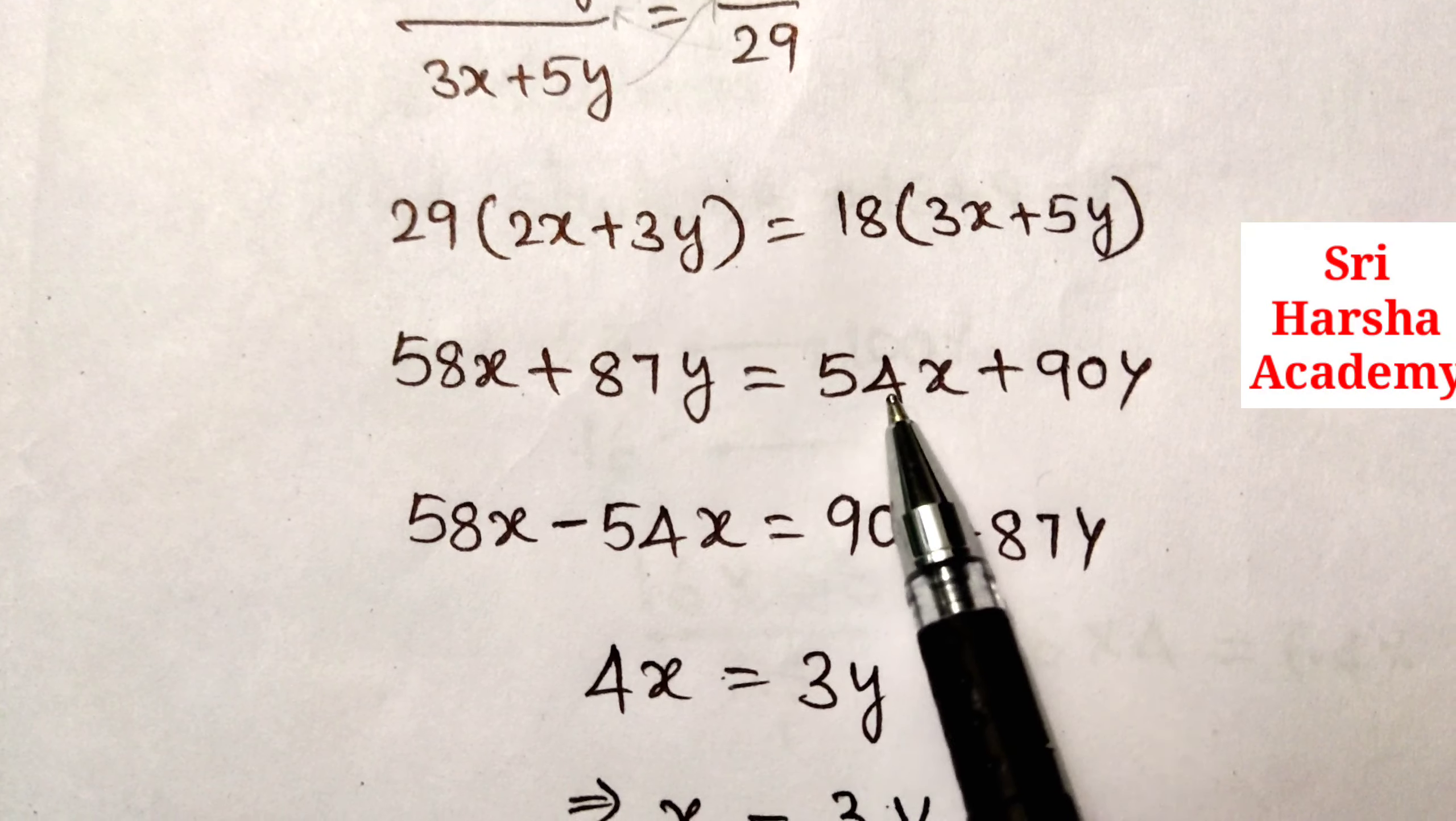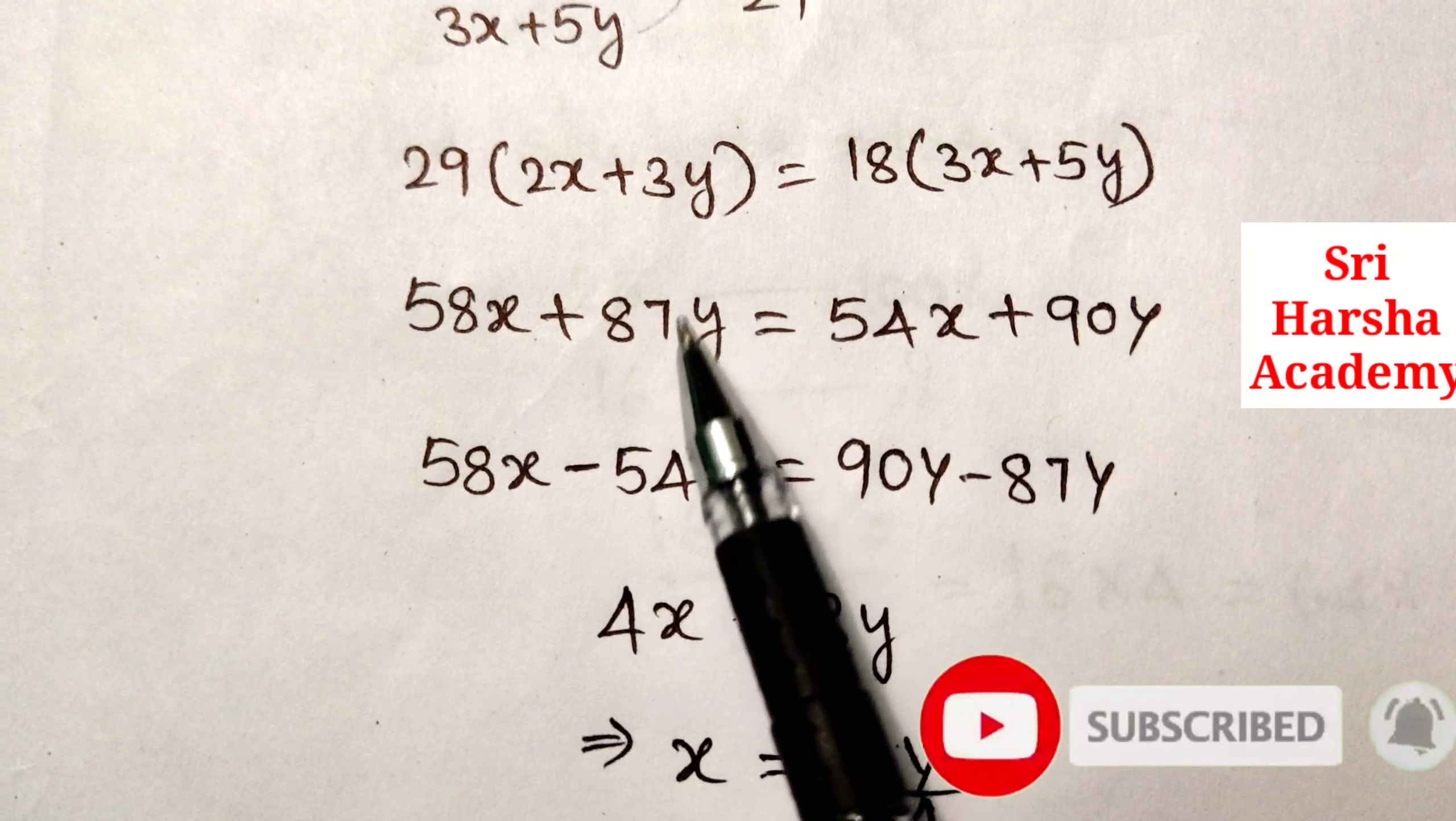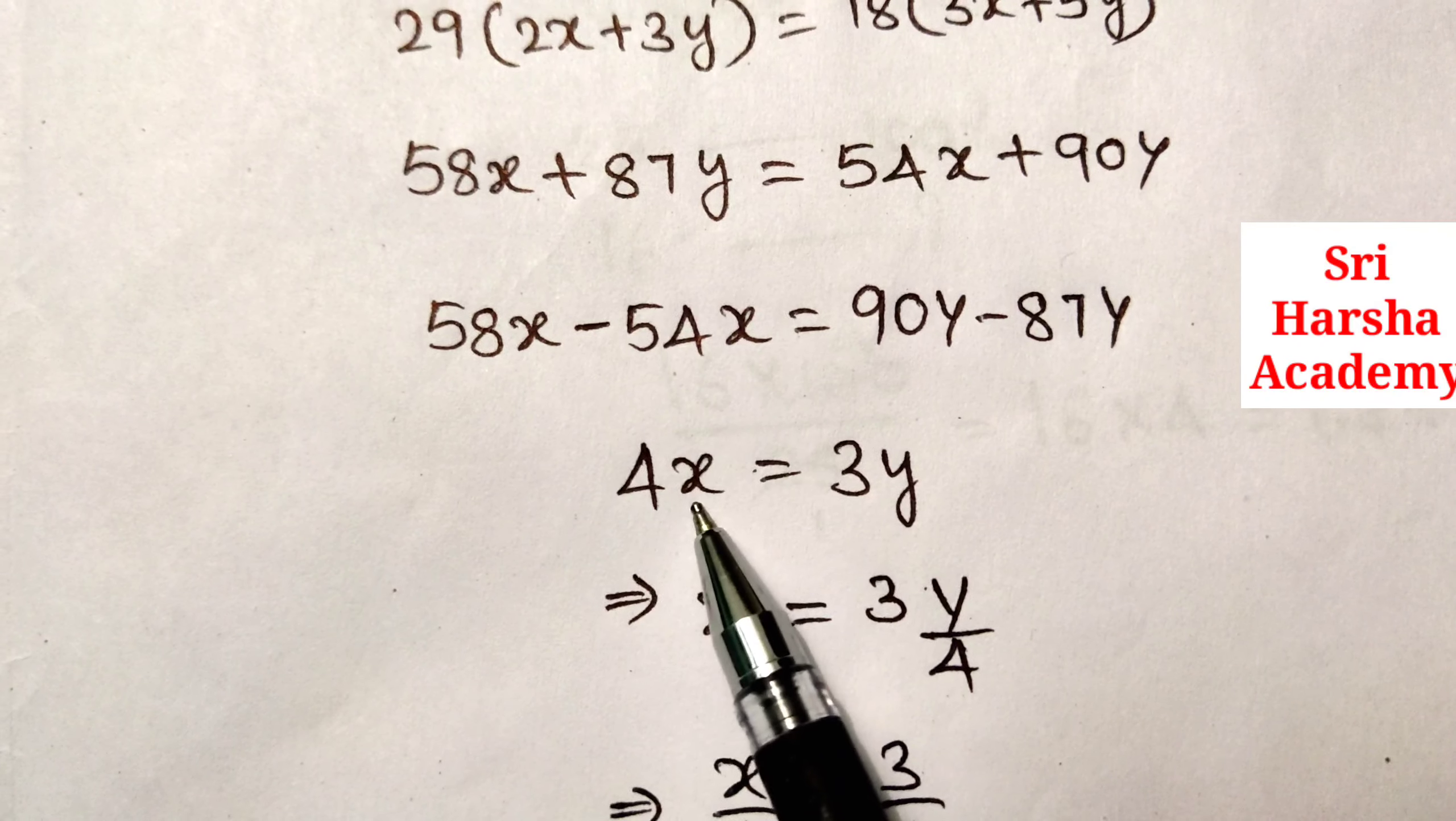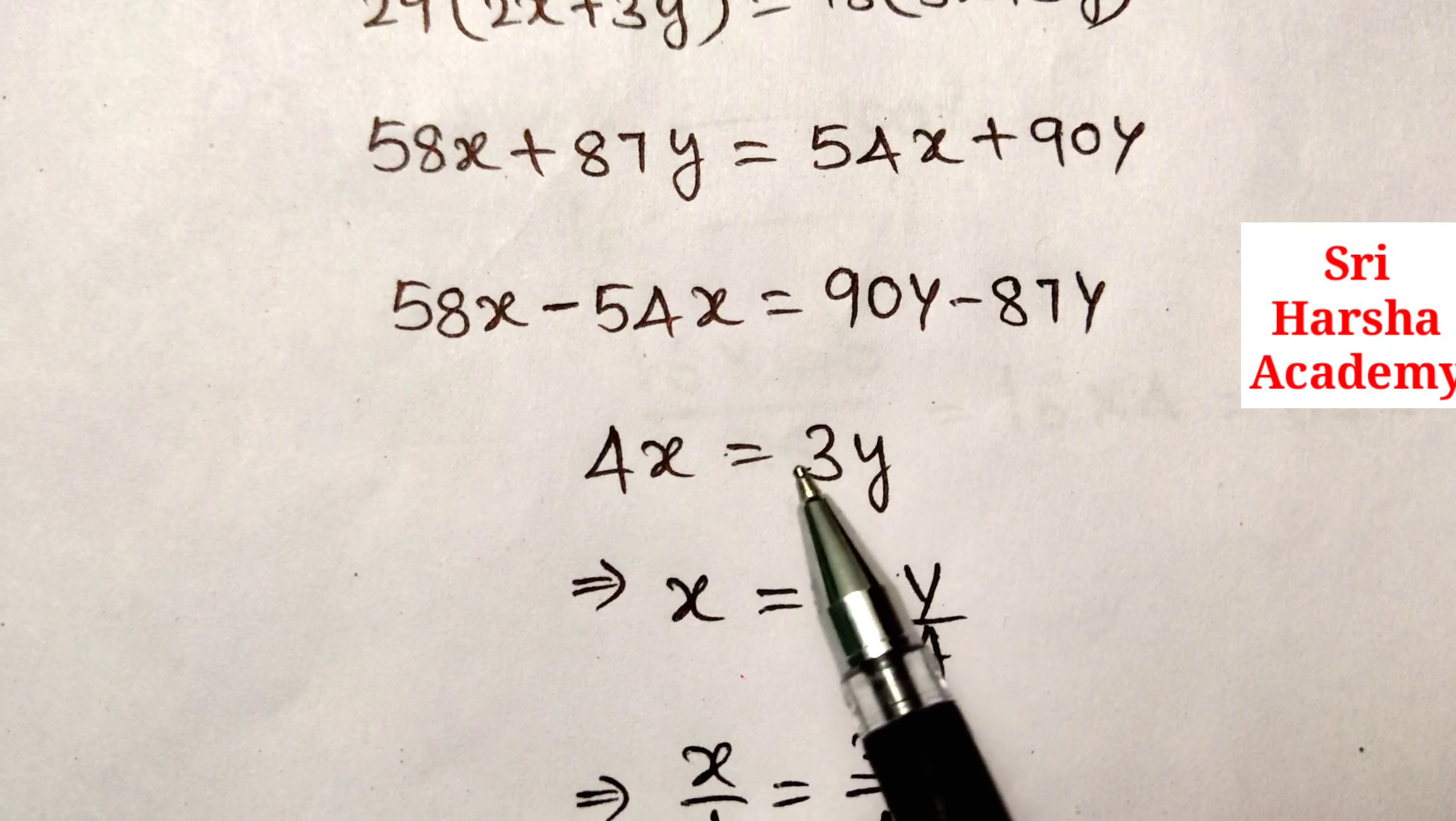Here, 54x is transferred to left side and 87y is transferred to right side. Here, 58x minus 54x, we get 4x is equal to 90y minus 87y, 3y.